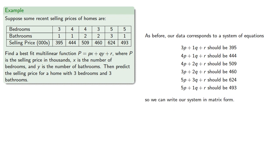And so we can write our system in matrix form. We have our coefficient matrix, our column vector of variables, and our column vector of constants.